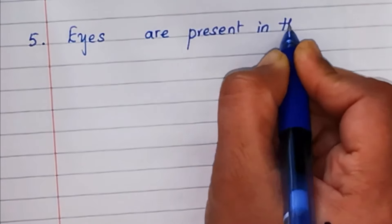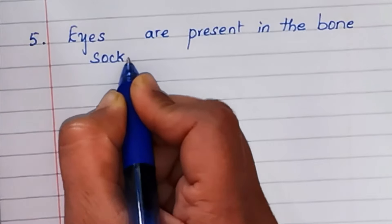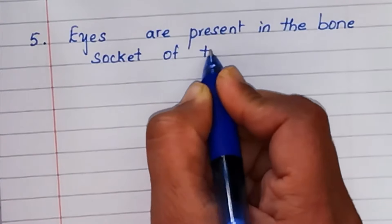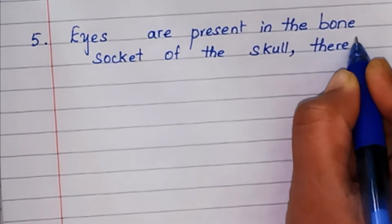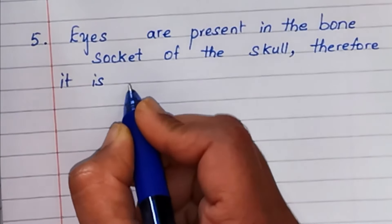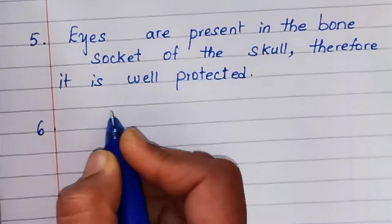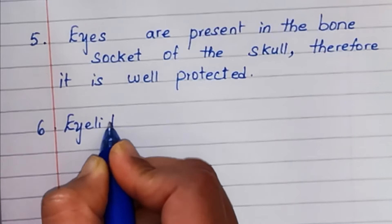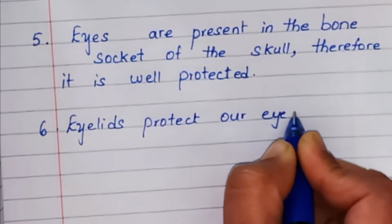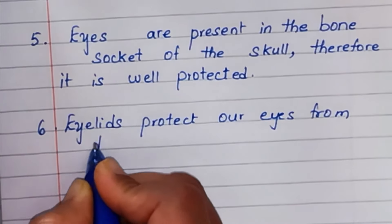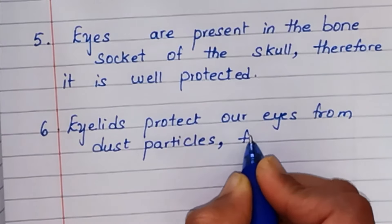Fifth line, eyes are present in the bone socket of the skull. Therefore, it is well protected.